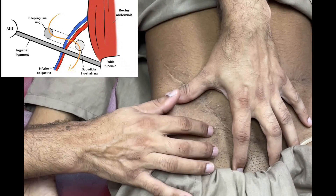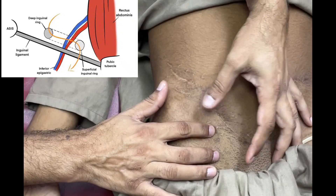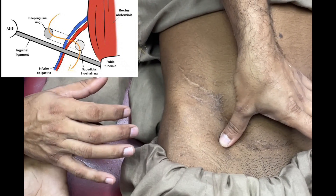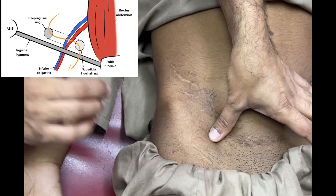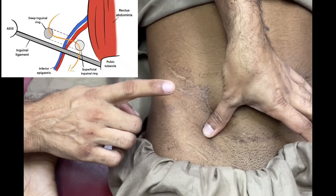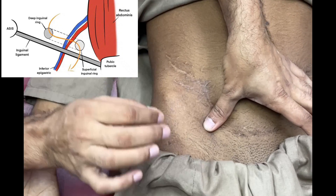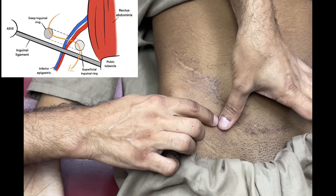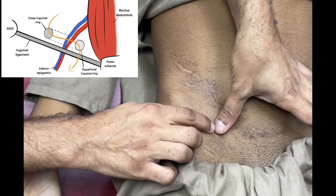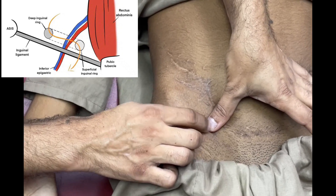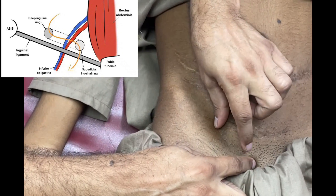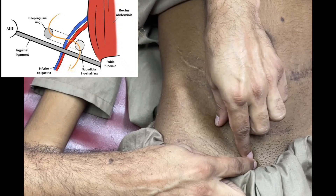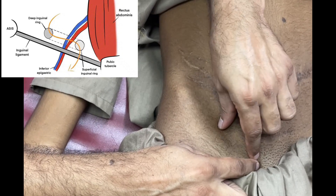The midpoint of the inguinal ligament is significant because the deep inguinal ring lies here. So the deep ring is here, the superficial ring is here, and the inguinal canal runs from deep to superficial ring.